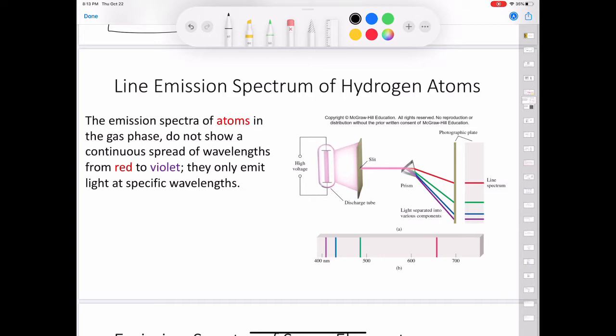A feature common to the emission spectra of the sun and of a heated solid is that both are continuous. That is, all wavelengths of visible light are represented in the spectra. The emission spectra of atoms in the gas phase, on the other hand, do not show a continuous spread of wavelengths from red to violet.